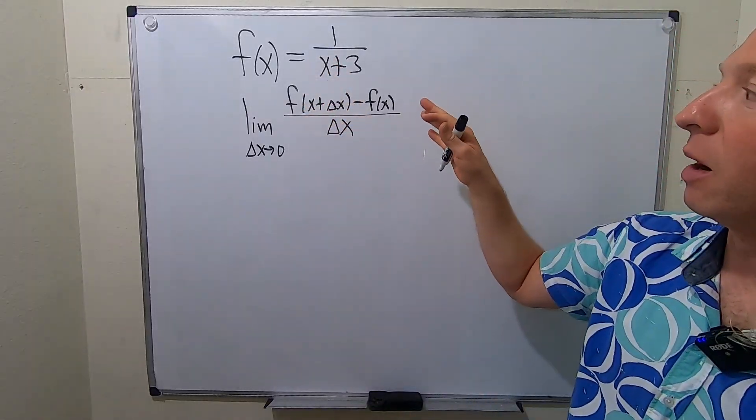Let's work this out carefully. The first step is to evaluate the function at x plus delta x. Since f(x) = 1/(x+3), you replace x with x+delta x, giving 1/(x+delta x+3). Then we subtract f(x), which is 1/(x+3), and all of this is divided by delta x. You replace all x's with x+delta x, then keep f(x) as is.